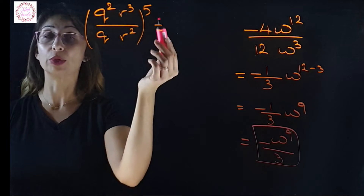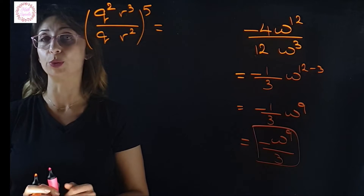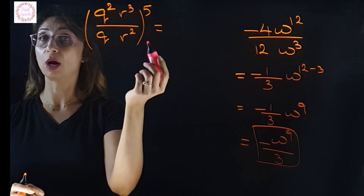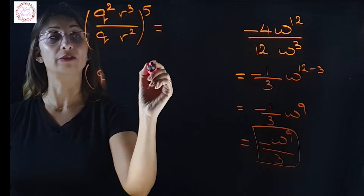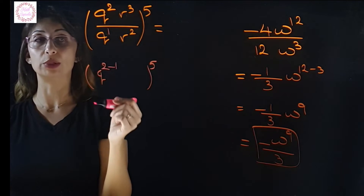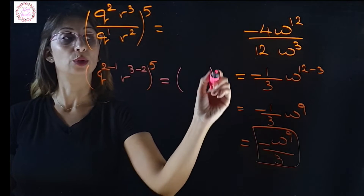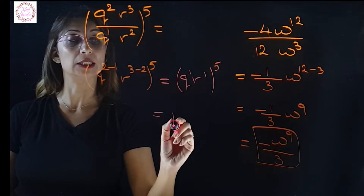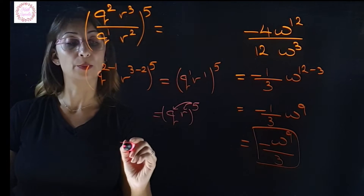Another expression has q's and r's inside a bracket with a power of 5 outside. Before distributing the 5, we simplify inside the bracket first. We look at the same bases: q power 2 over q power 1 gives q power 2 minus 1, and r power 3 over r power 2 gives r power 3 minus 2. So inside the bracket we get q to the 1 times r to the 1, which is simply qr. Then we distribute the 5 to get q power 5 times r power 5.